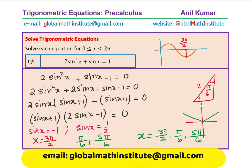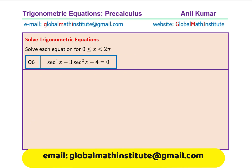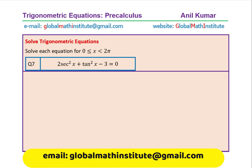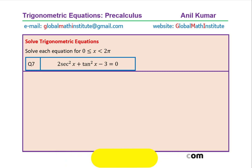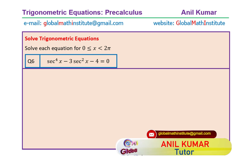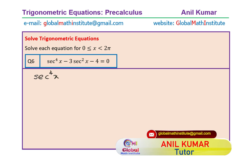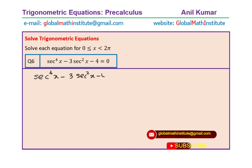Now I'd like you to solve questions 6 and 7: question 6 is a quadratic equation in secant, and question 7 is a combination of secant and tan. Question 6 is secant to the power of 4x minus 3 secant squared x minus 4 equals 0.